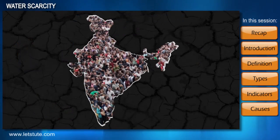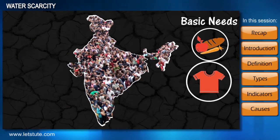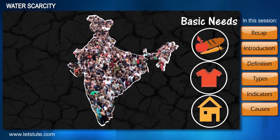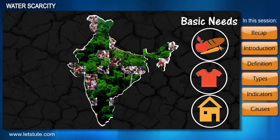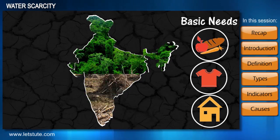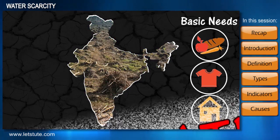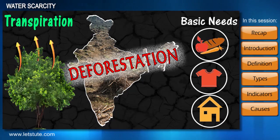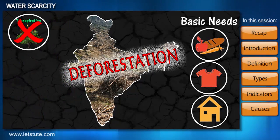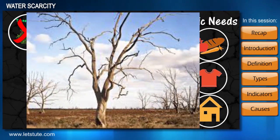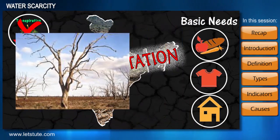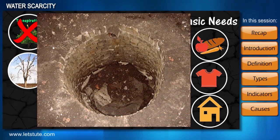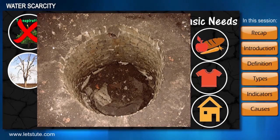To meet the basic needs of food, clothing, and shelter for the growing population, many forested areas are cut down, leading to deforestation. When part of a forest is removed, trees no longer transpire water, resulting in a much drier climate. Deforestation also reduces the content of water in soil and groundwater.